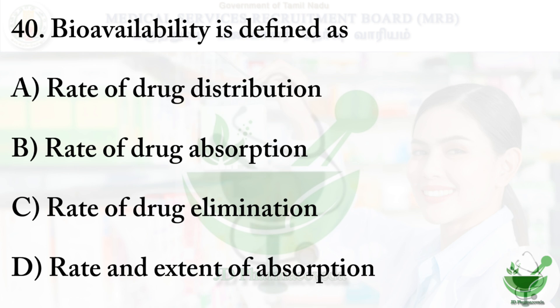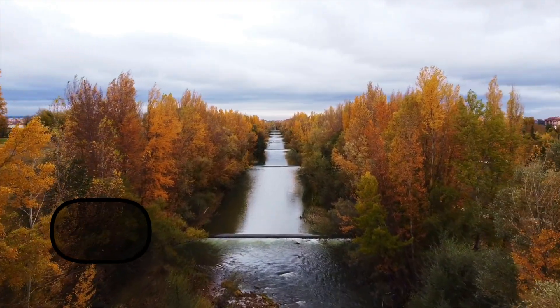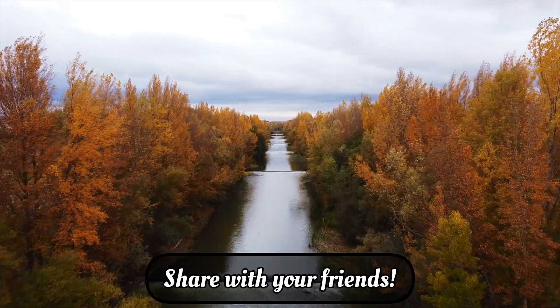Question number 40: Bioavailability is defined as — option A rate of drug distribution, option B rate of drug absorption, option C rate of drug elimination, and option D rate and extent of absorption. The correct option is option D. Bioavailability means how much quantity of the drug we are taking reaches the systemic circulation. For example, with an intravenous route of administration, the drug enters the bloodstream straight away, so its bioavailability is 100%. Thank you for watching — if you like our video, please like, enter your thoughts in the comment section, share with your friends, and subscribe to our channel.